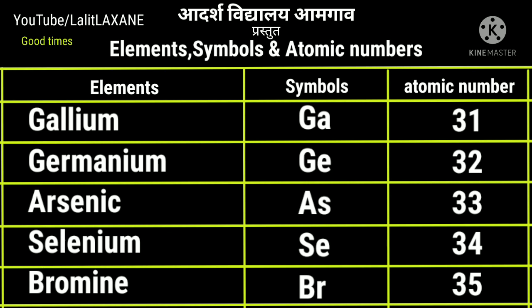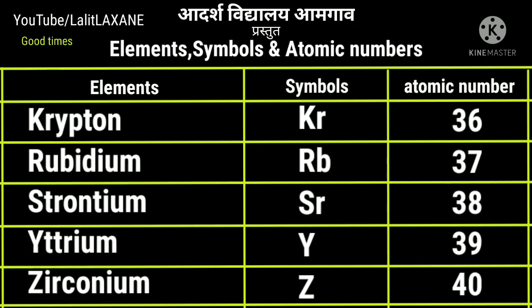With atomic number 31 is gallium, symbol Ga. Germanium Ge, 32. Arsenic As, 33. Selenium Se with atomic number 34 and bromine with atomic number 35 and symbol Br. Next with atomic number 36, we have krypton, that is Kr.